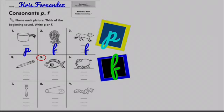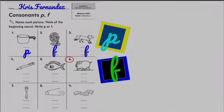And now, let's go to number five. Fish. Fish. What is the beginning sound? F. F. Write down that letter. Number six. Pig. Pig. P. P. P. Write it down.